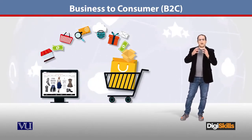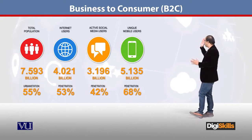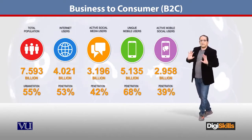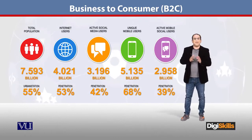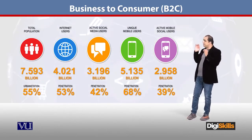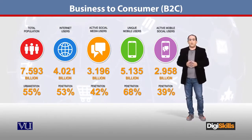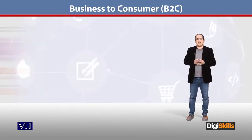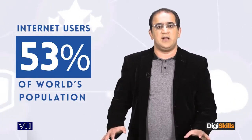Now, as you can see, the total world population is around 7.5 billion. An interesting fact is that internet users are around 4.1 billion — that is 53% of people on earth, as of March 2018, are using the internet. That is a very big number. Beyond that, those active on social media — meaning Facebook, LinkedIn, Instagram —